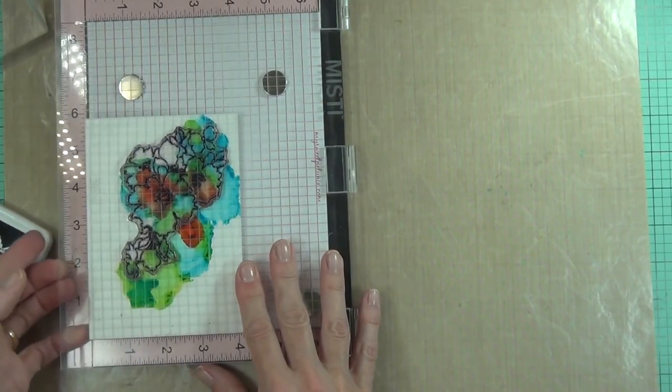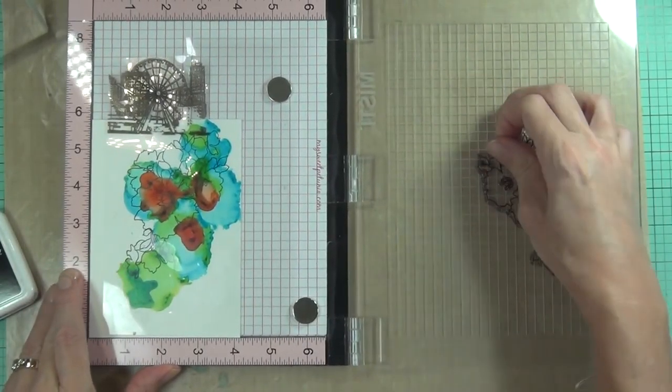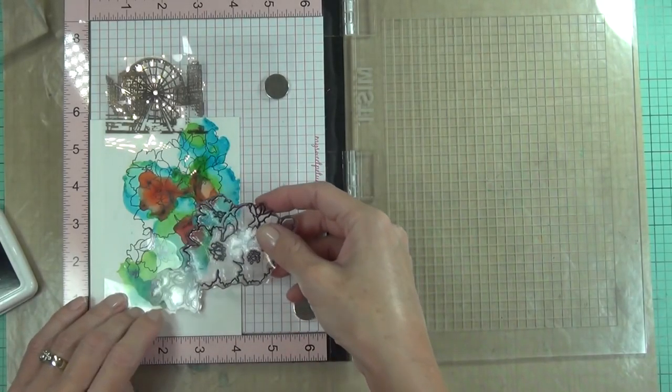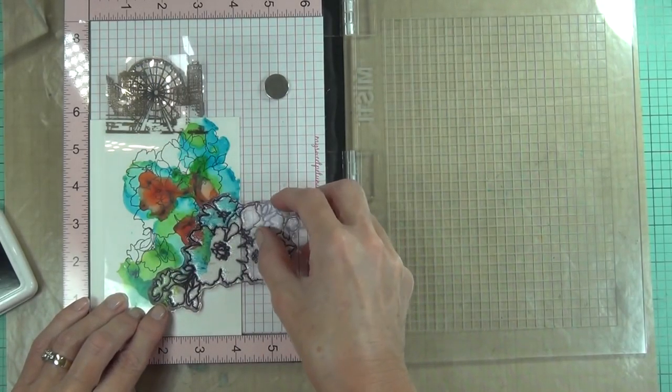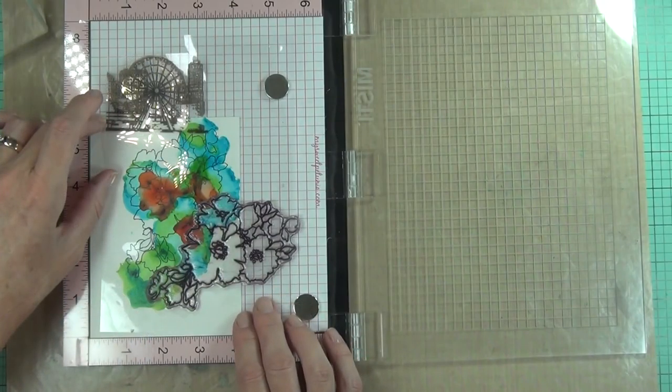Well I let it dry longer than that, and that seemed to work just fine. That's why I actually attached the panel to the front of my card first, because I didn't want to be mucking around with it after that. I'm using my MISTI so I can stamp it a few times, and that was actually a good idea because I did need to stamp it a few times, especially over a couple of those areas that had a lot of ink on them.